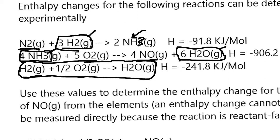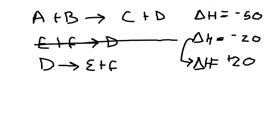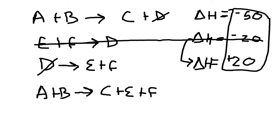So imagine the situation where we have A plus B yields C plus D, and then we also have another equation, E plus F yields D. Imagine we want to be able to get rid of D. So what do we do? We can turn this equation around. We'll say that D yields E plus F. And in that case, the enthalpy, the sign will change. So the new change of enthalpy will be positive 20. Then we can forget about this middle equation. We can cancel out D, and we will get A plus B yields C plus E plus F. And the change in enthalpy will be negative 50 plus positive 20. So the change in enthalpy will equal negative 30.